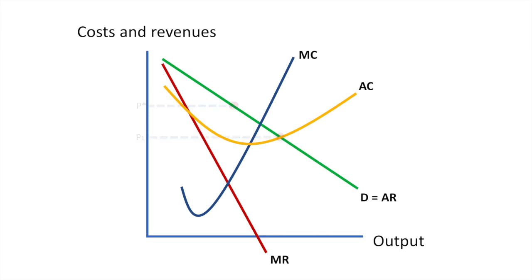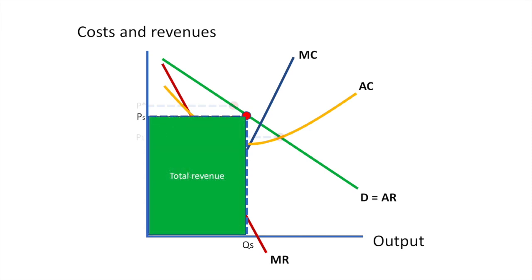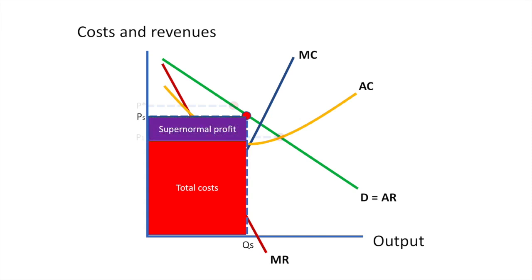A profit satisficer may price their product at price P-s. This will result in the quantity produced of Q-s. Total revenue generated is equal to P-s times Q-s. Total costs are determined by looking at where quantity Q-s intersects the average cost curve and following it across — thus our total costs are represented by the area in red. The difference between the two regions is our supernormal profit after satisficing, which is less than the supernormal profit that could be achieved if the firm were a profit maximizer.